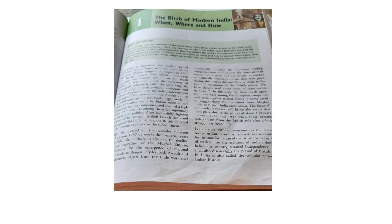Take your Social Science book, page number 127. According to historians, the modern period of Indian history began with the death of the last great Mughal Emperor Aurangzeb in 1707. Though people from different European countries had reached the Indian soil much earlier, it was only under the successors of Aurangzeb, collectively called the later Mughals, that the road to their political, economic and cultural domination over the Indian subcontinent was paved. After successfully fighting a series of battles against their French rivals and some powerful Indian rulers, the British emerged as the dominant power in the subcontinent.